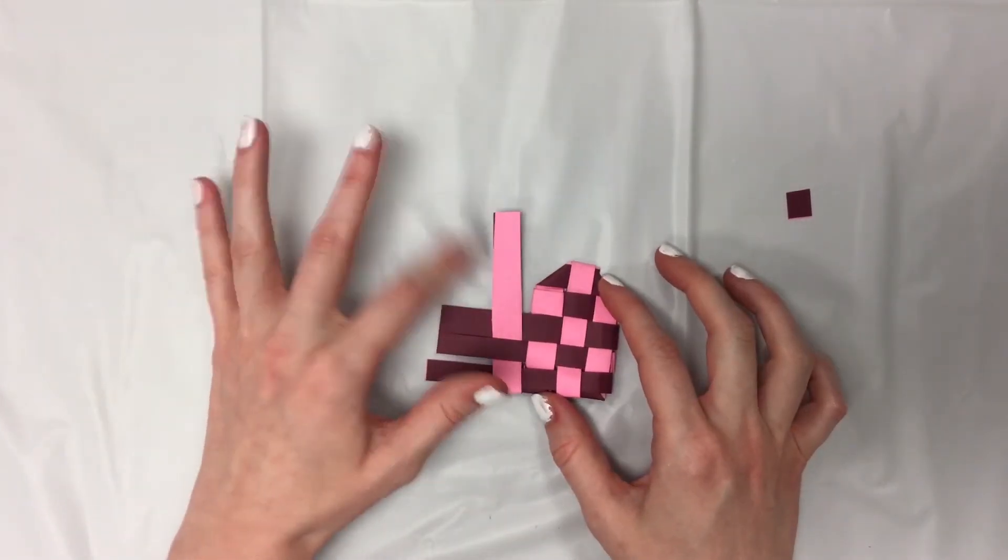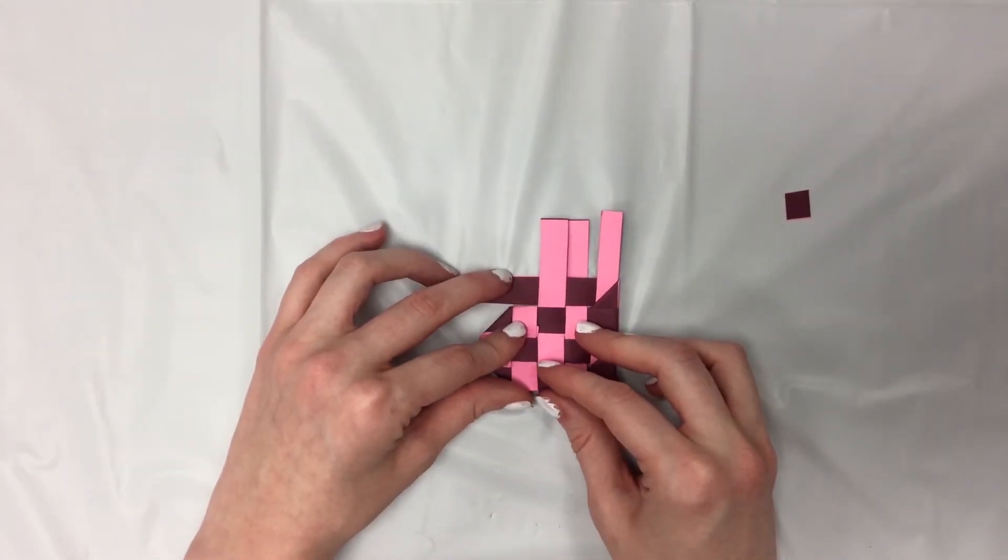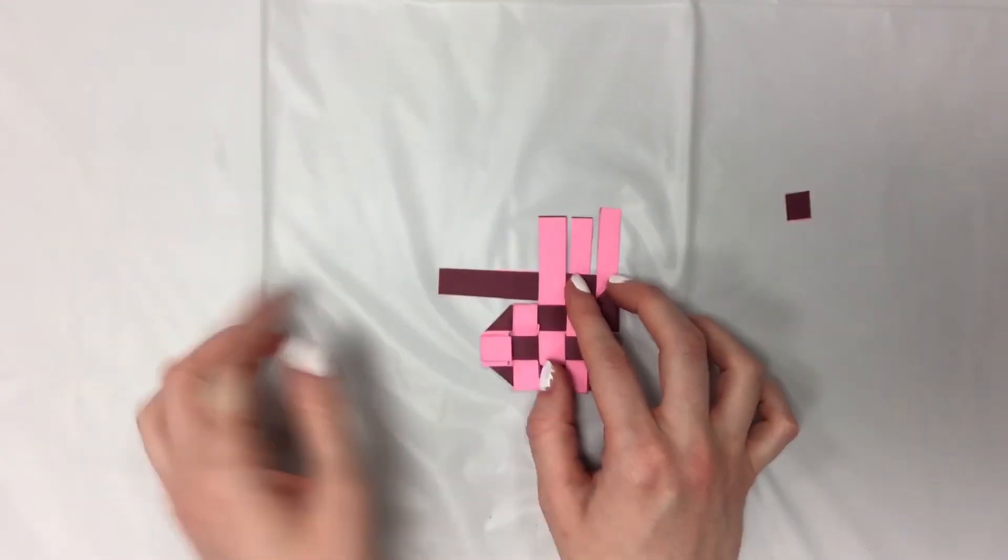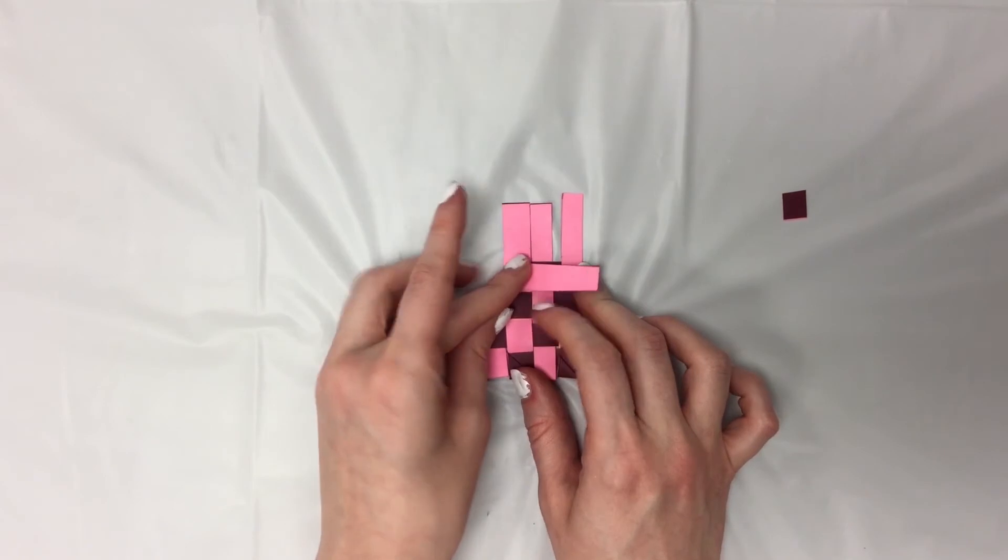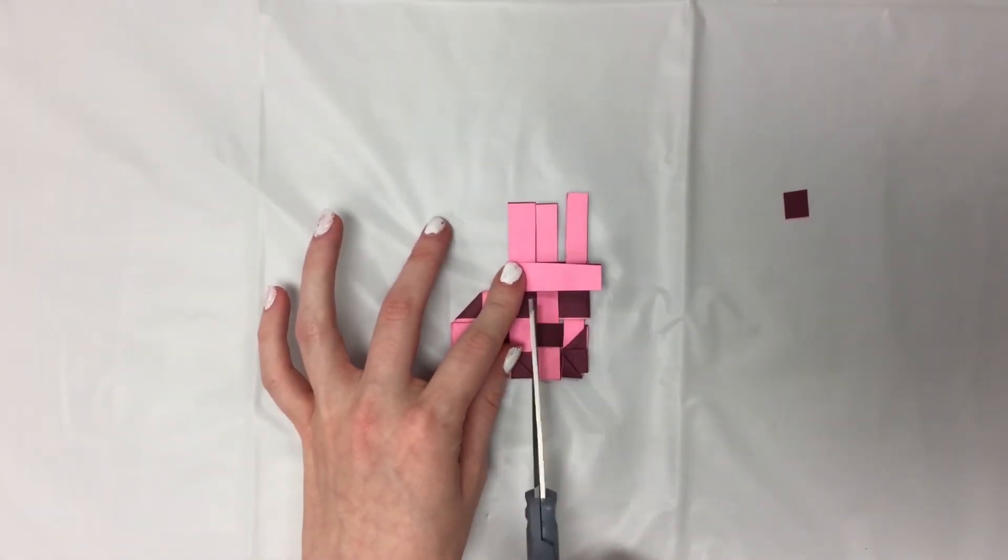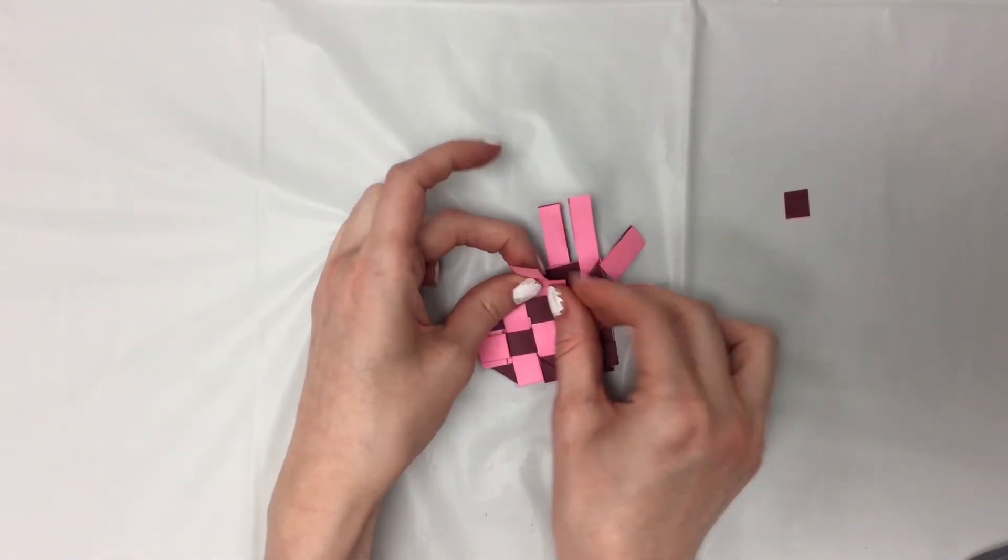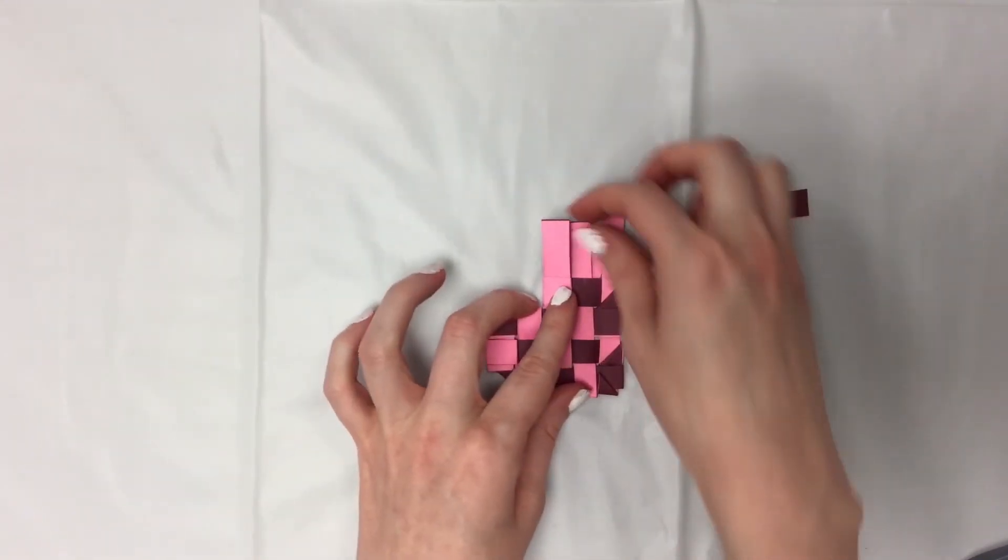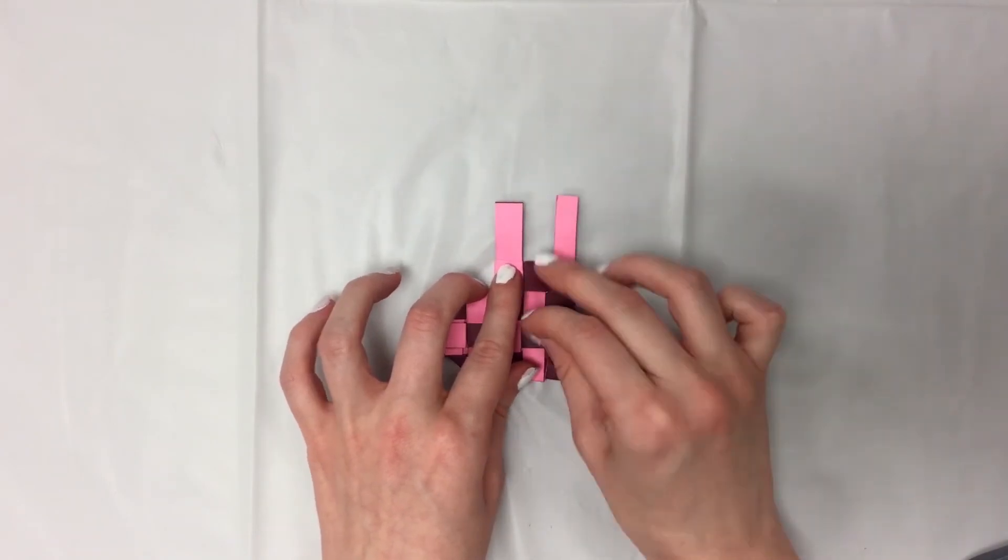So now we have half of our heart done. For this side, we'll flip it over. So we're working the same way. So we have three strips up and one strip to the side. I'm going to take the strip on the side, fold it over, cut a little bit off and fold it underneath to hide it. Fold the middle strip down.